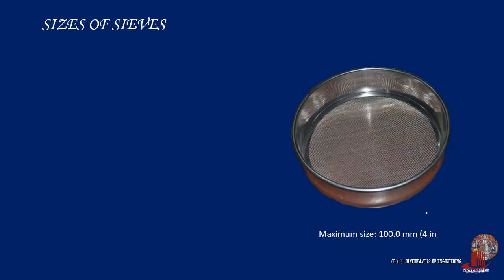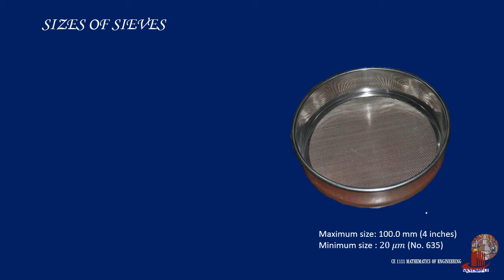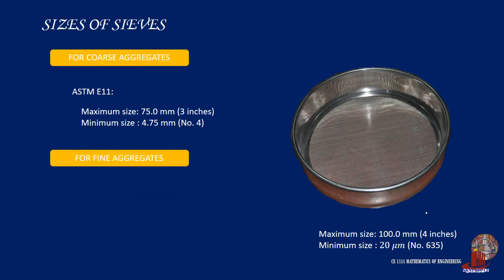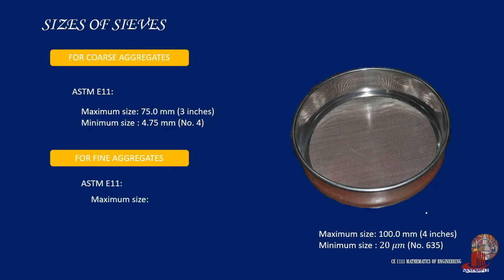The available sizes of sieves from ASTM E11 are classified according to the samples to be tested. The maximum size for a test sieve is 100 millimeters or 4 inches, and the minimum is 20 micrometers, designated as number 635. For coarse aggregates, the maximum aperture size is 75 millimeters or 3 inches, with the minimum as 4.75 millimeters or the number 4 sieve. The same opening size of 4.75 millimeters is the largest when testing fine aggregates, and the minimum is 75 micrometers or the number 200 sieve.